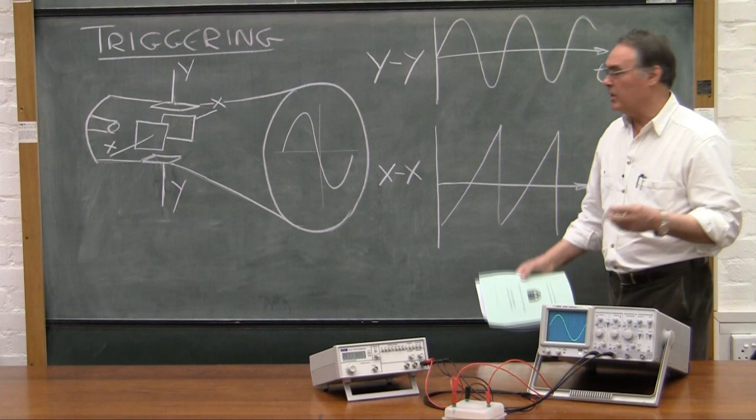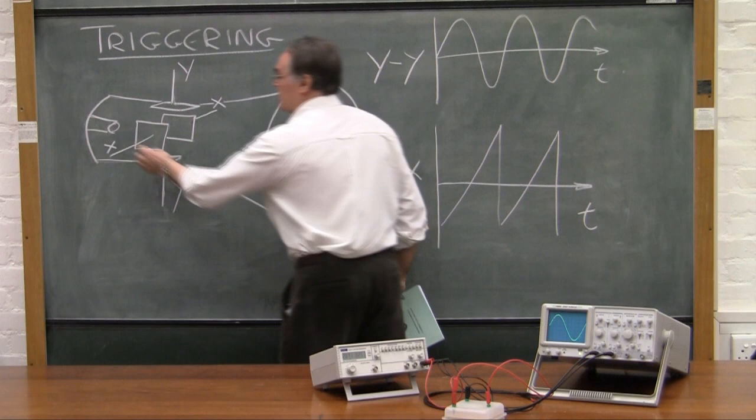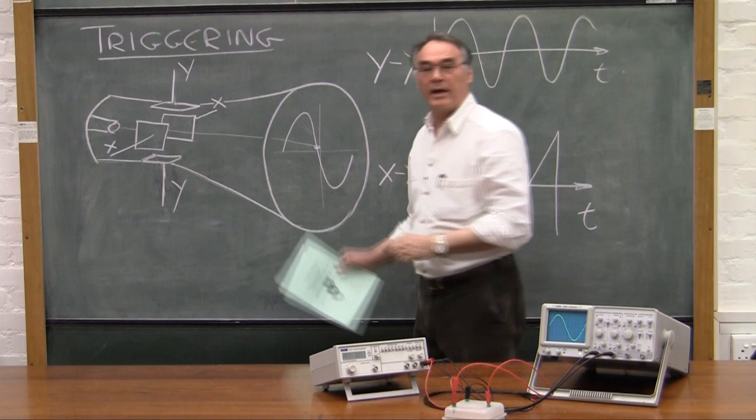There's an electron gun at the back of the oscilloscope that fires out a stream of electrons that come forward and they hit the screen. And wherever it hits the screen, it leaves a bright dot.